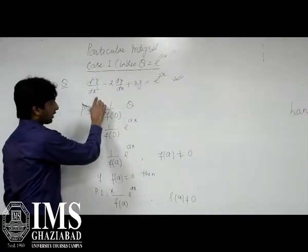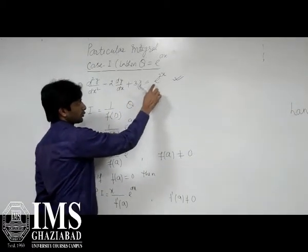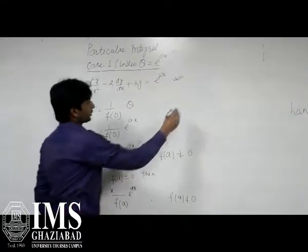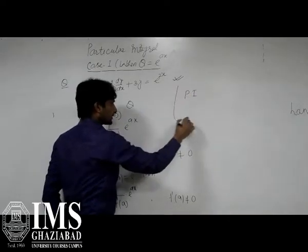I have an example. Suppose d²y upon dx² minus 2 dy upon dx plus 3y is equal to e to the power 2x. As you know, we will discuss particular integral for this particular integral.